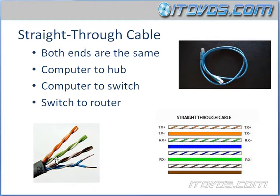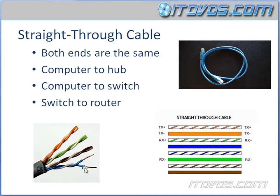Now let's talk about the ways we can actually wire one of these UTP cables to connect to different devices. The first type is a straight-through cable. We've probably all seen an Ethernet cable, a UTP cable, which has an RJ45 connector at the end. Inside the RJ45 connector are the twisted pairs, stuck into the connector in a certain order.